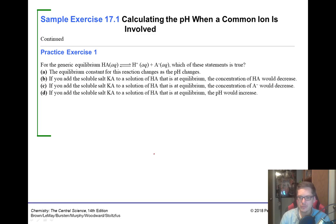Let's do a couple practice problems. For the generic equilibrium HA ⇌ H+ + A⁻, which statement is true? The equilibrium constant changes as pH changes — that's not true; the only way to change the equilibrium constant is by changing temperature. If you add the soluble salt KA to a solution of HA at equilibrium, the concentration of HA would decrease — not true, because adding KA produces K+ and A⁻, increasing [A⁻] and shifting the reaction left, so [HA] would increase. And adding KA so that [A⁻] would decrease is also not true — the equilibrium still shifts left but we still produce more A⁻.